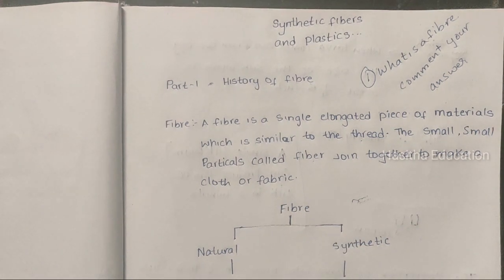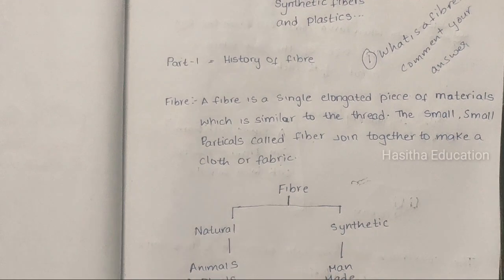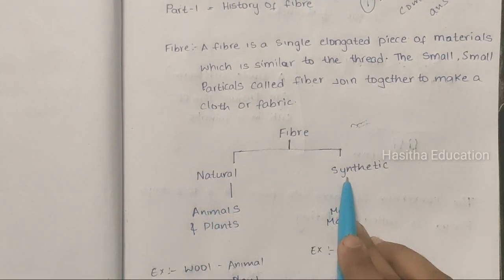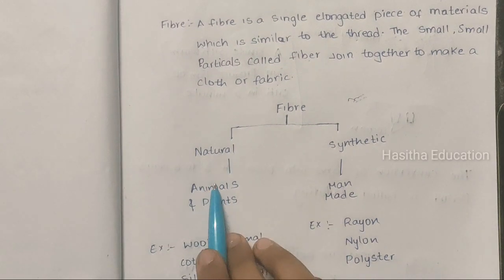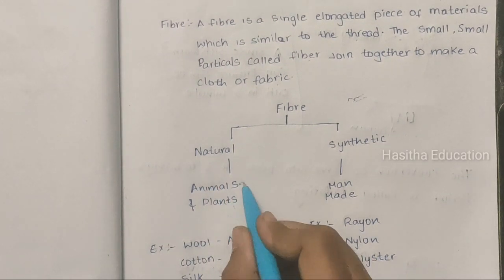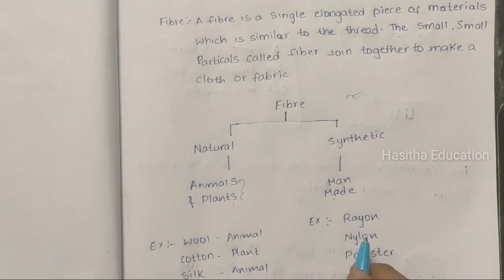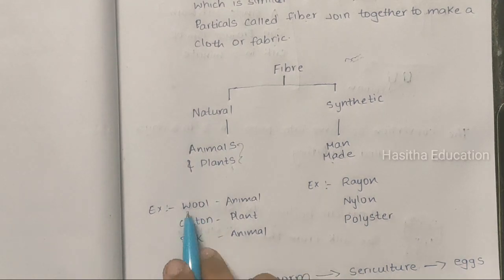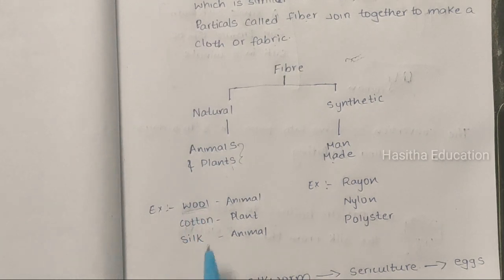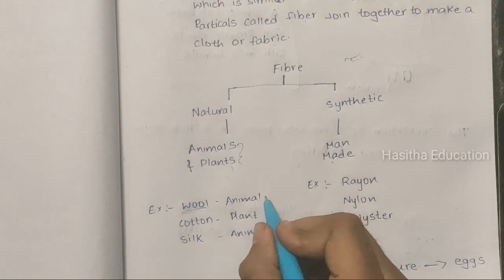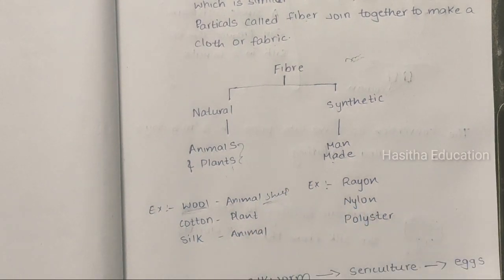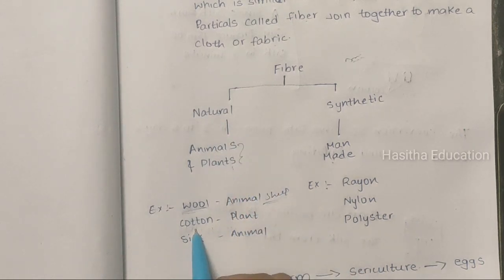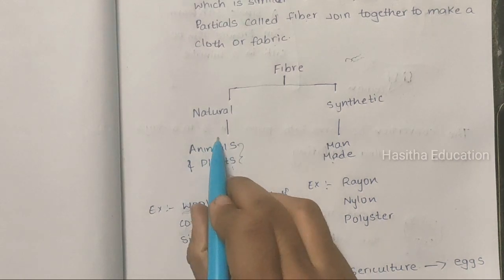There are two types of fibers: natural fiber and synthetic fiber. Natural fiber means it comes from plants or animals. For example, wool comes from sheep — sheep is an animal, so wool is a natural fiber. Cotton comes from the cotton plant, so it is a natural fiber. Fibers which come from plants or animals are called natural fibers.